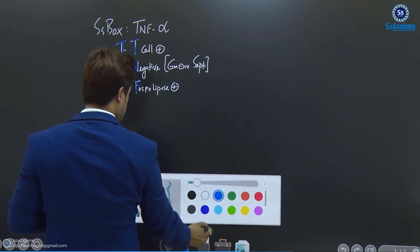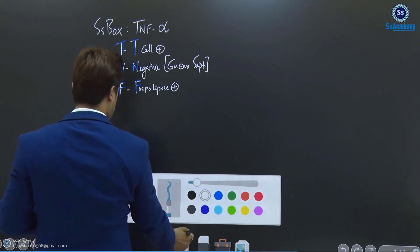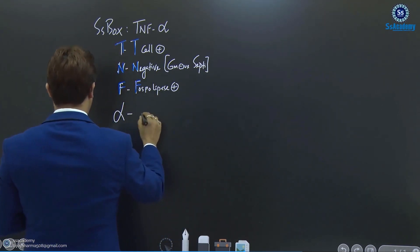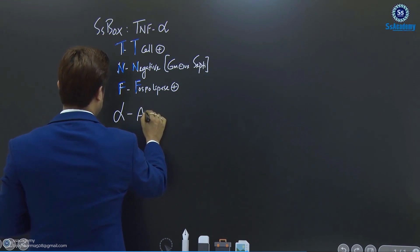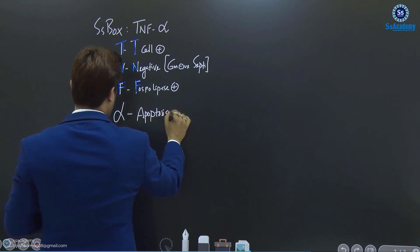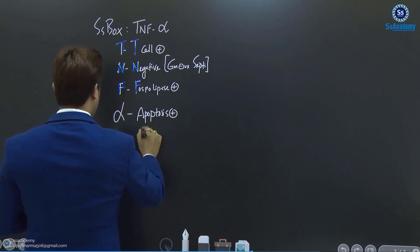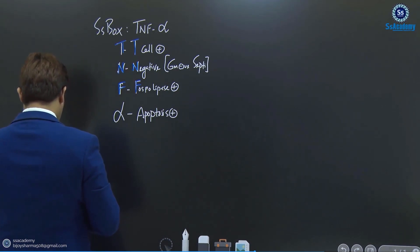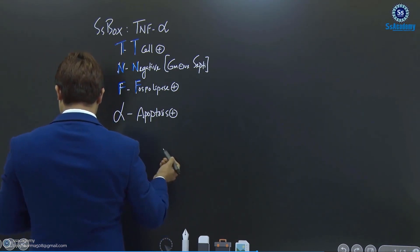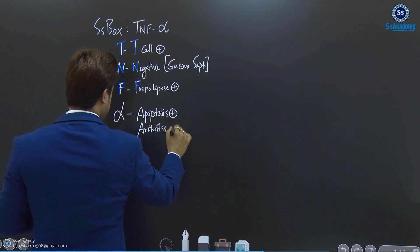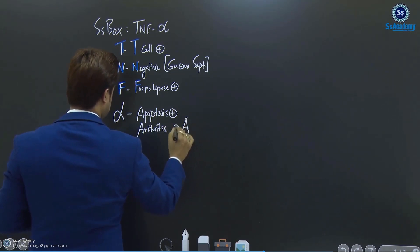In contrast, for the alpha part: A for alpha induces apoptosis. And also A for rheumatoid arthritis — meaning TNF-alpha plays a key role in the pathogenesis of rheumatoid arthritis.